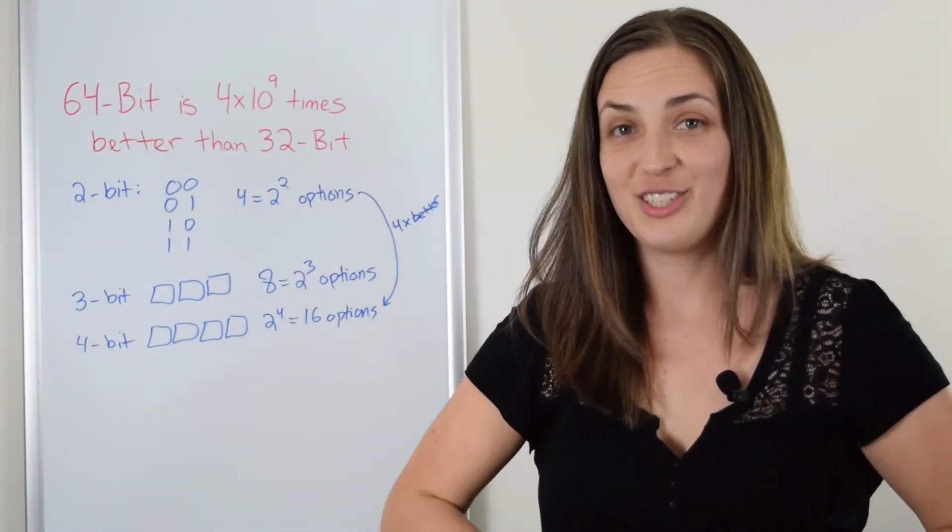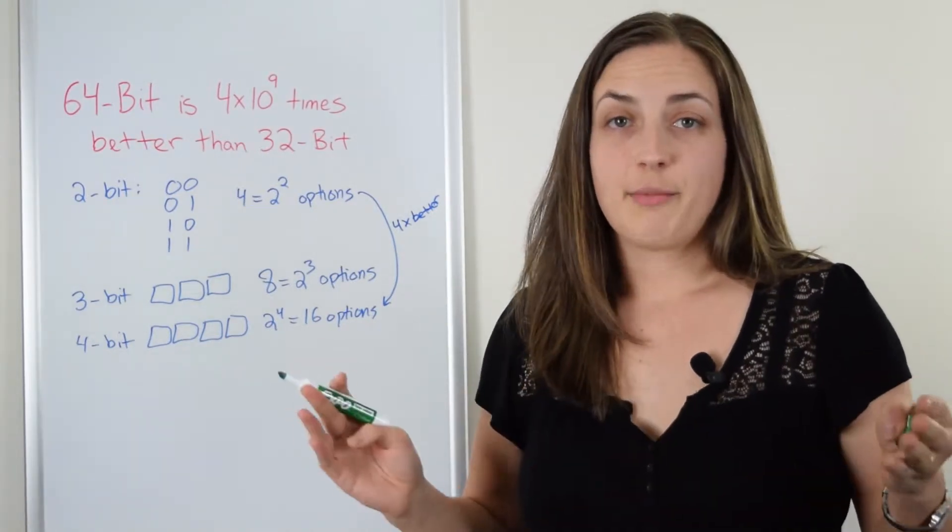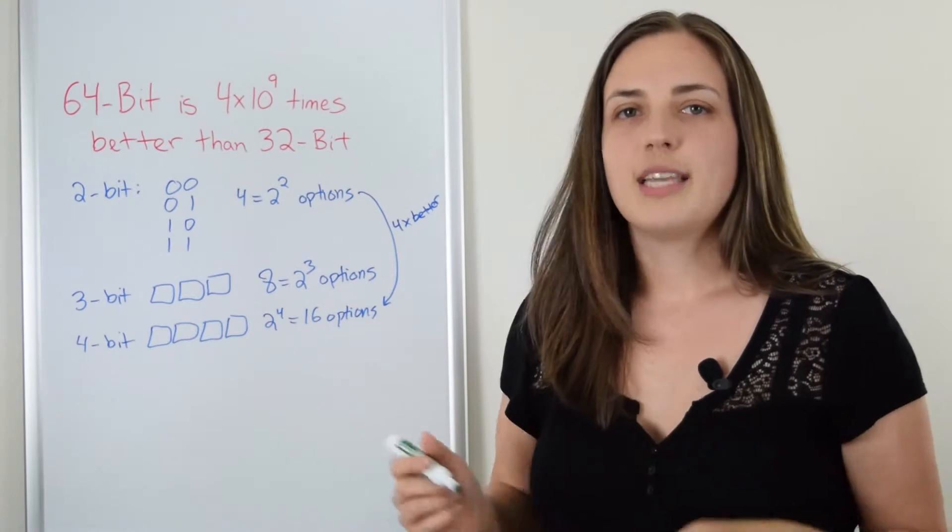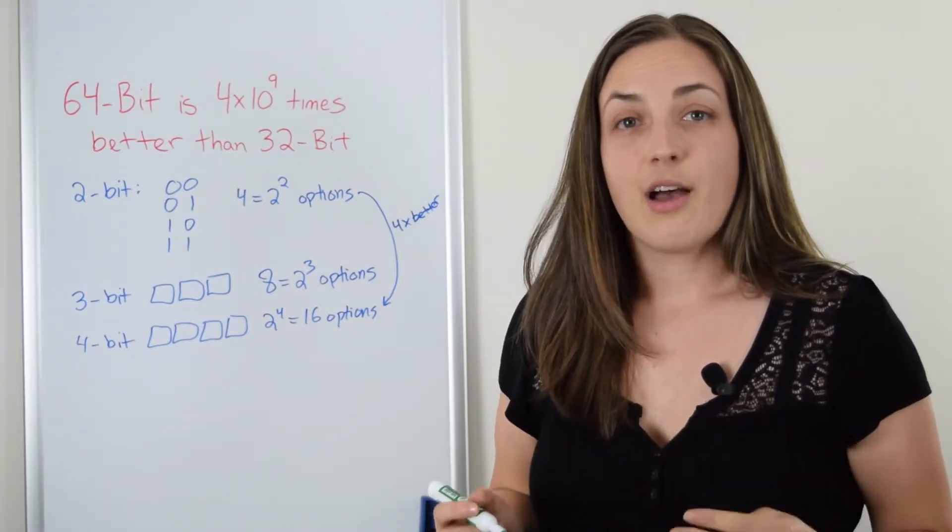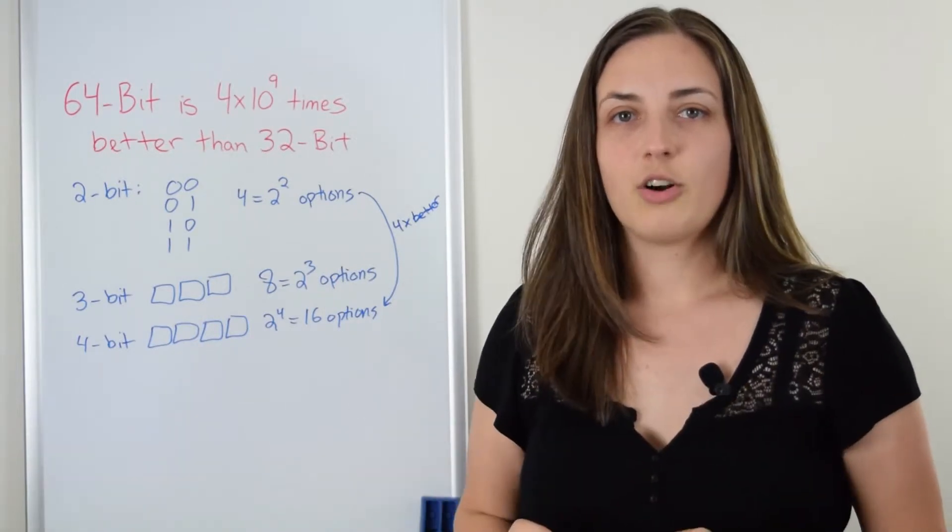I think we're ready to compare 32 and 64 next. Thirty-two-bit systems. We're allowed to use up 32 bits and each bit is a zero or a one. So like we've seen with these small examples, we could have two to the power of 32 different possible zero-one sequences.